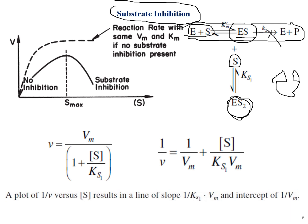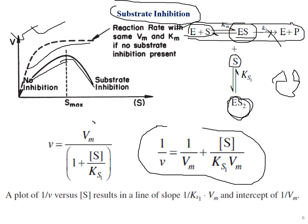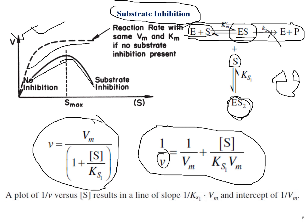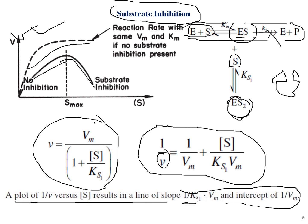This forms a complex ES2 which hinders the formation of product because of the presence of two substrates. In the graph, without inhibition it leads to the formation of product; with substrate inhibition, product formation is hindered. The expression for v can be derived from this. It's noted that the reaction rate with the same Vmax and Km — if no substrate inhibition is present — represents the normal Michaelis-Menten reaction, while the inhibition arises from the presence of two substrates.